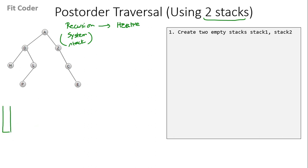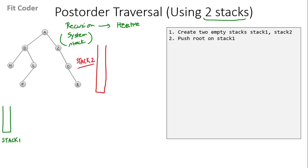Let's say this is our stack1 and this is our stack2. Then we push the root on stack1. So A is the root — we push it on stack1. In the next step, we create a variable 'current', which is of tree node type, and we initialize it to null.